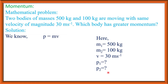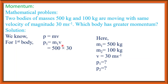We know momentum P is equal to M into V. For the first body, we can write P1 is equal to M1 into V. M1, the mass of the first body, is 500 kg and velocity is 30. So if we multiply it, it will be 15,000 kg meter per second. The unit of momentum is kg meter per second.